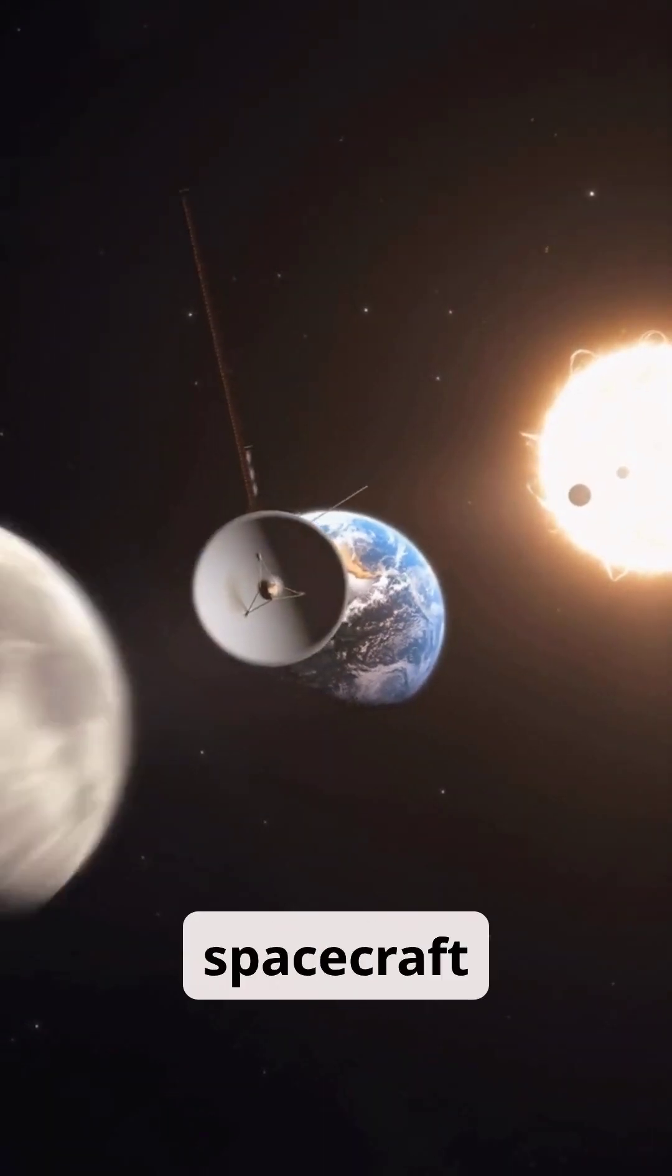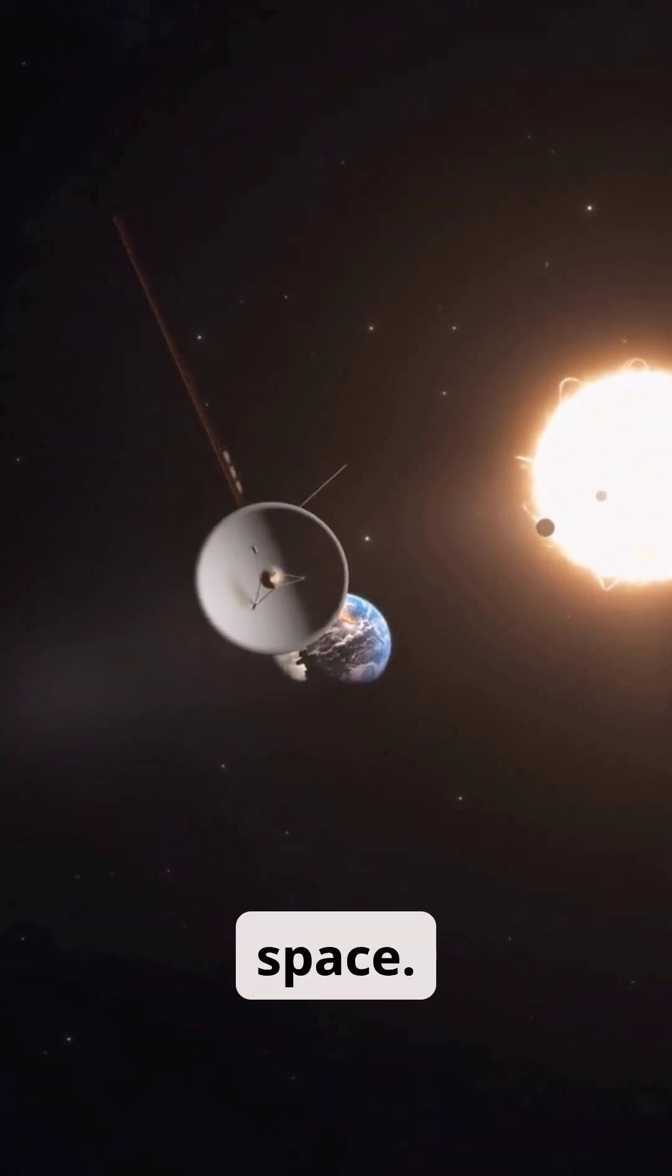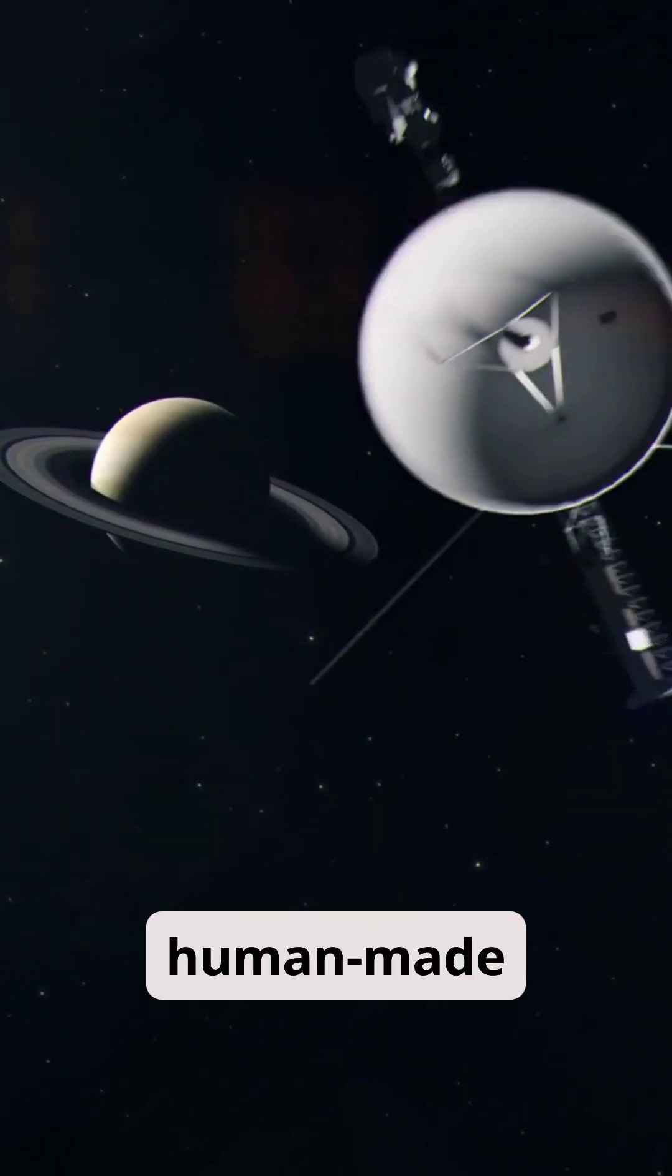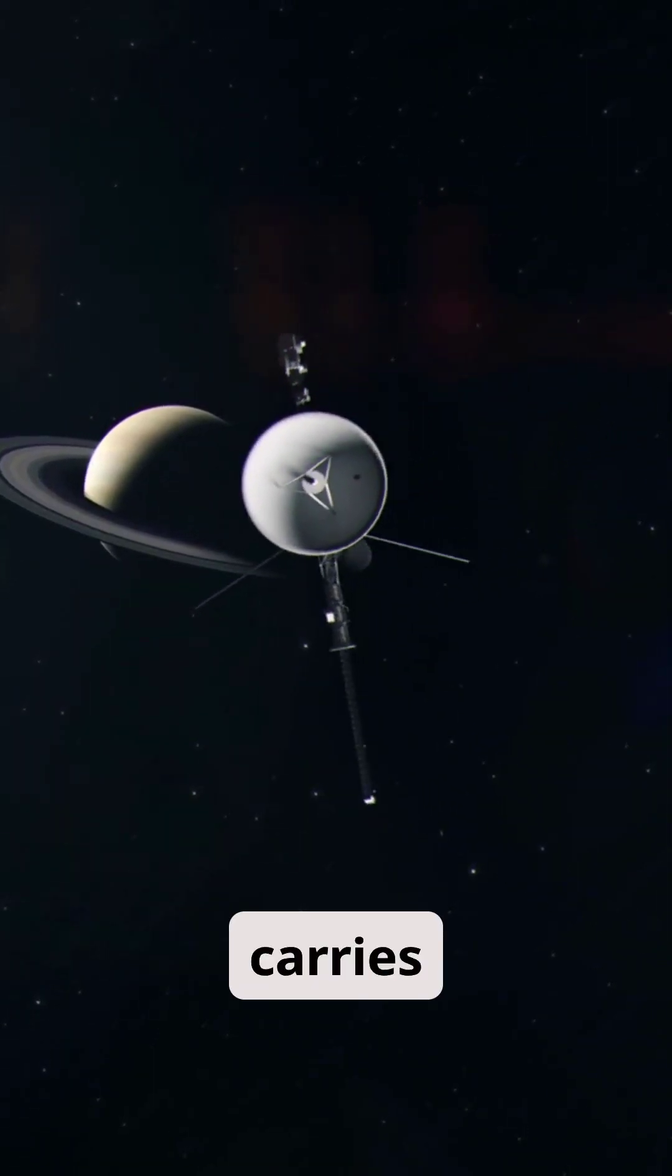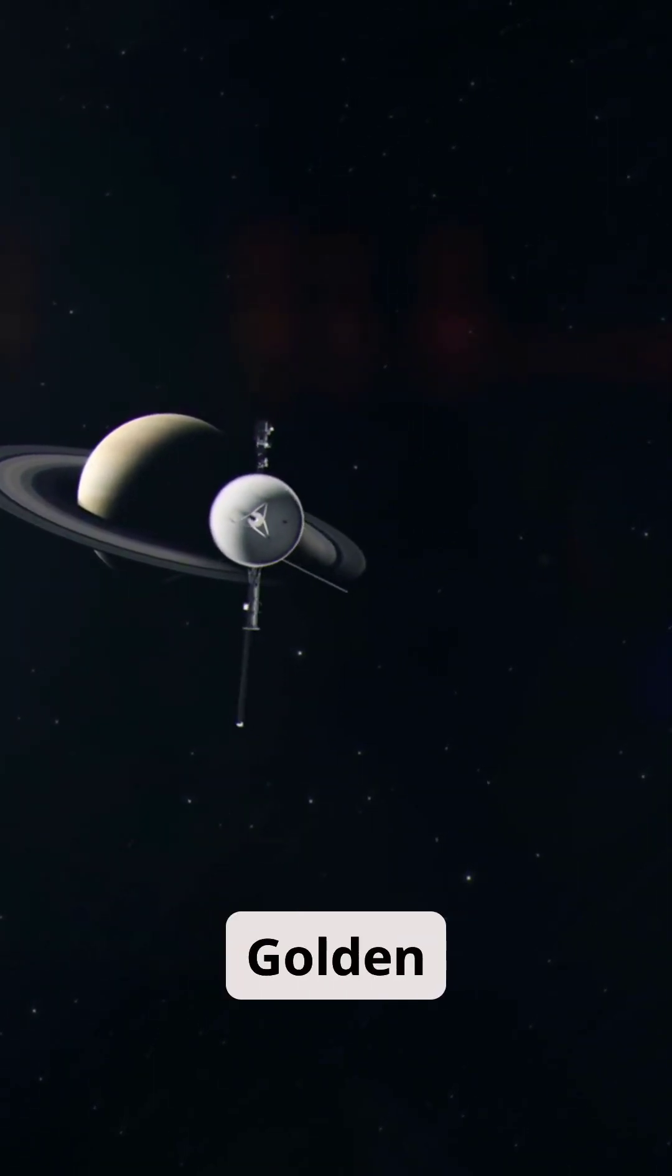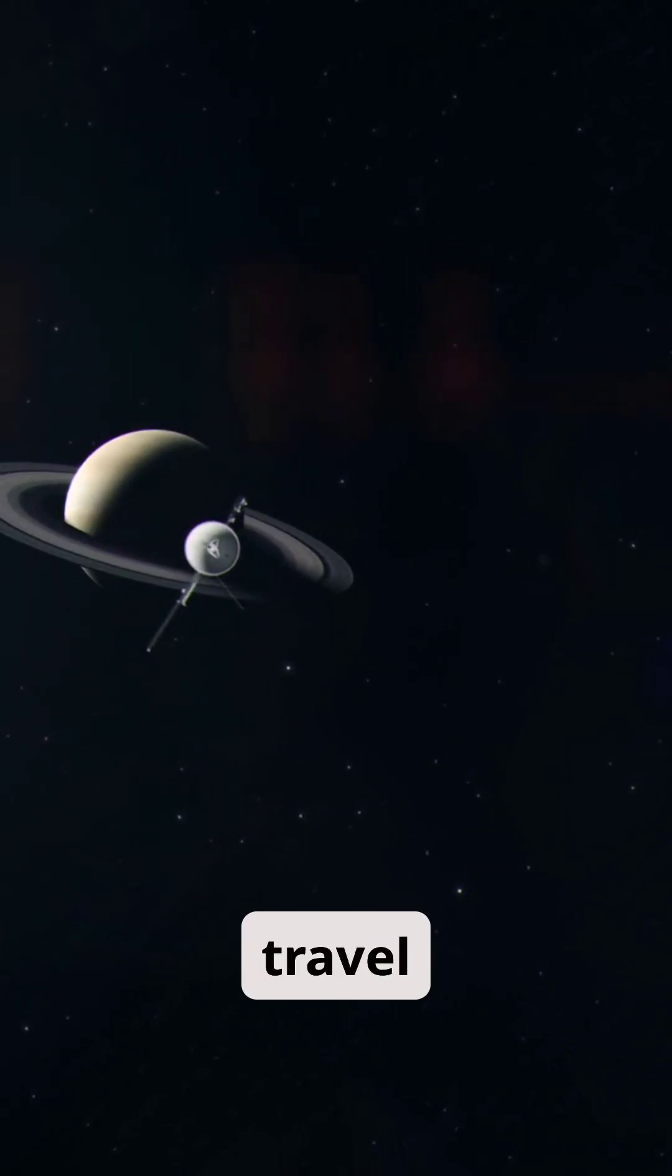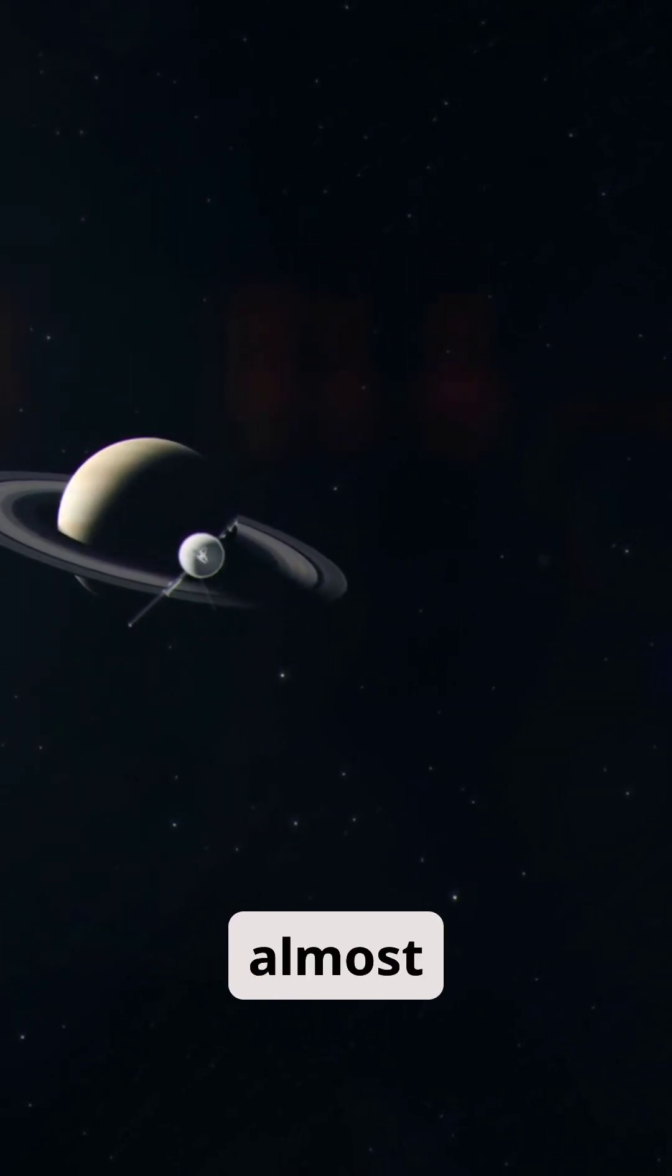Far beyond our solar system, a tiny spacecraft is still traveling through space. Voyager, launched in 1977, is the farthest human-made object from Earth. It carries a special message from our planet, a golden record with sounds and pictures of life on Earth. But how did it travel so far? And what keeps it going after almost 50 years?